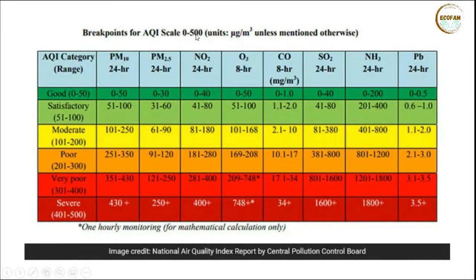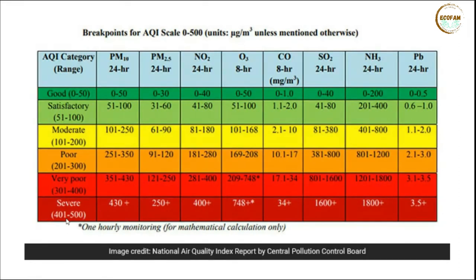The Air Quality Index is calculated on a scale of zero to 500, with six categories: Good (0–50), Satisfactory (51–100), Moderate (101–200), Poor (201–300), Very Poor (301–400), and Severe (401–500). You can search Google for a global overview of AQI, or obtain real-time AQI for Srinagar from the Jammu & Kashmir State Pollution Control Board located at Rajbagh.